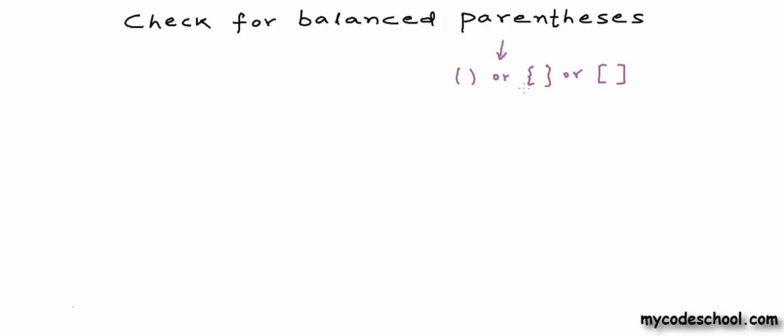When I say parenthesis, I also want to include curly braces and brackets in my definition of parenthesis. So the expression or string can contain characters that can be upper or lower case letters, symbols for operators, and an opening or closing parenthesis, curly brace, or square bracket.